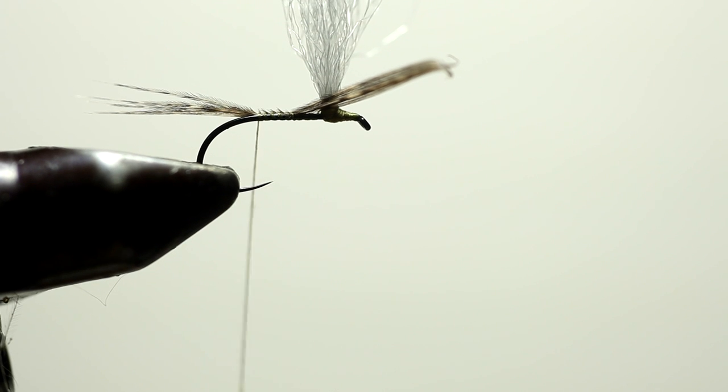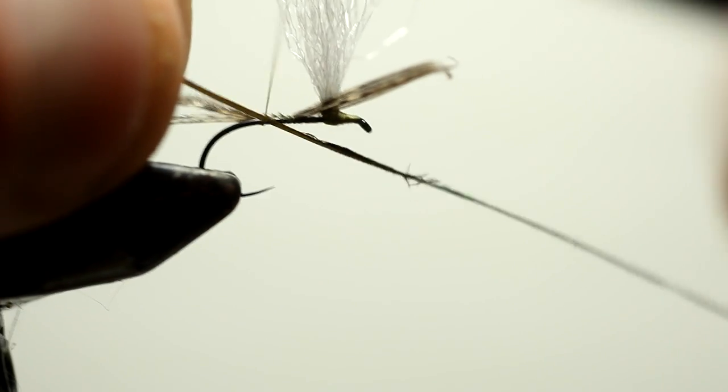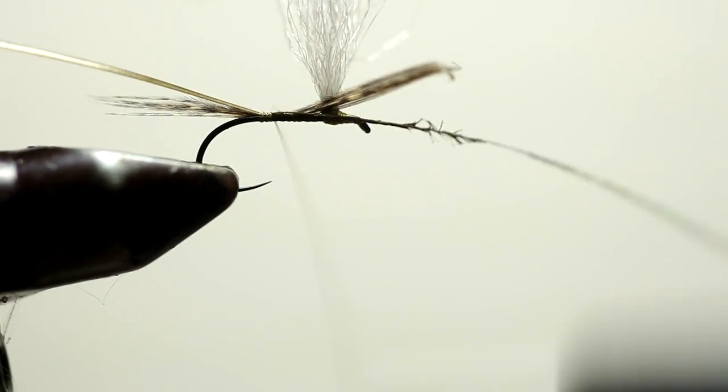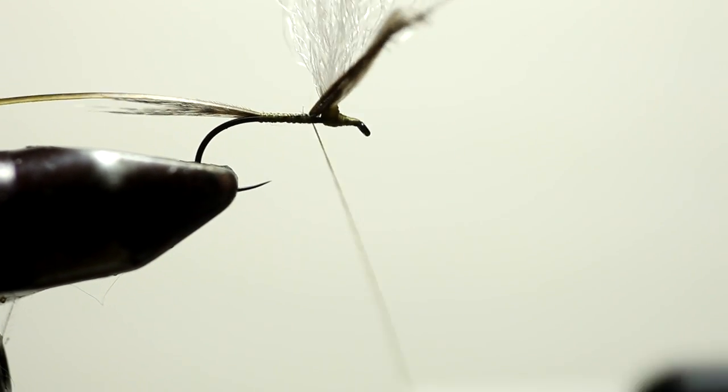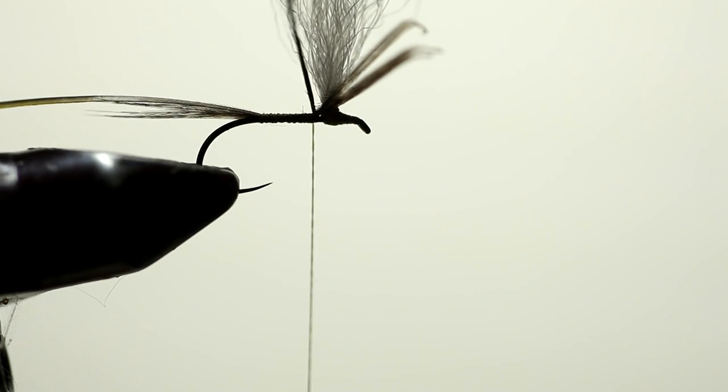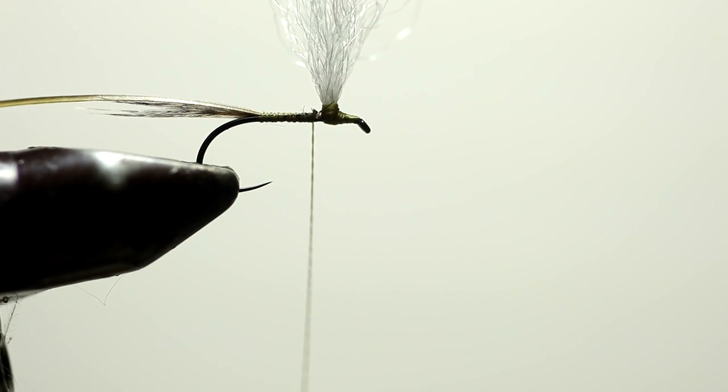Now, the next material is an olive strip peacock quill. Tie that in. Now I'm going to cut the end of the peacock quill out.